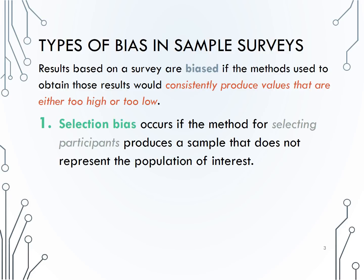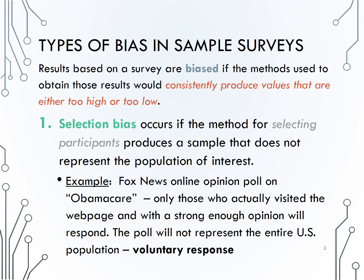The first type of bias we will talk about is selection bias. Selection bias occurs if the method for selecting participants produces a sample that does not represent the population of interest. An example of selection bias are online polls, which are actually an example of voluntary response bias, one type of selection bias.